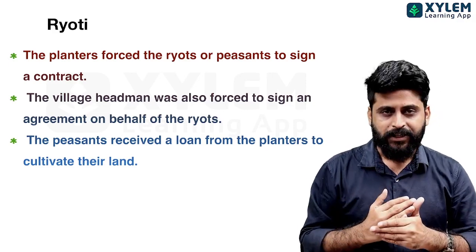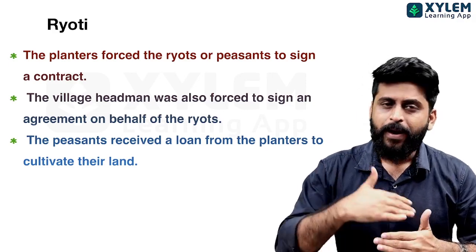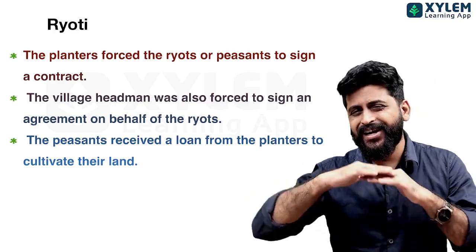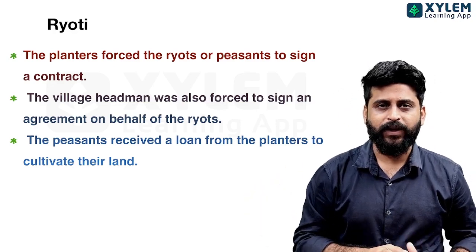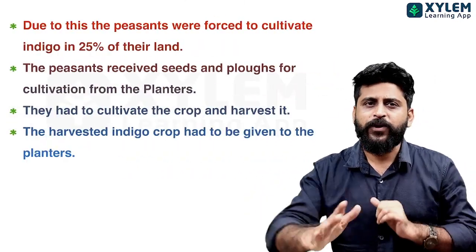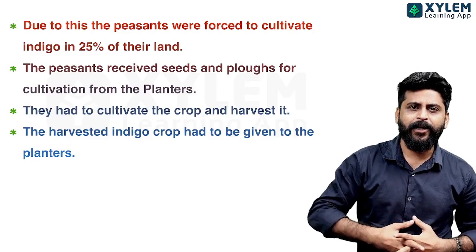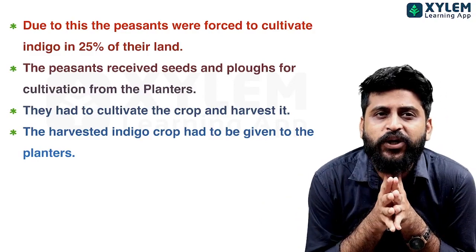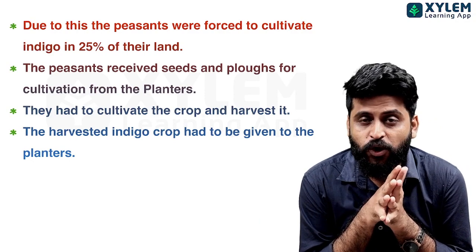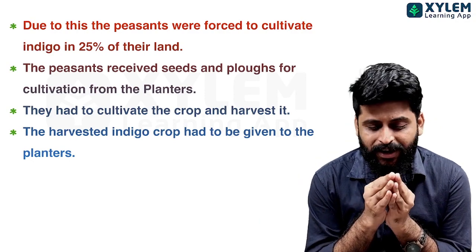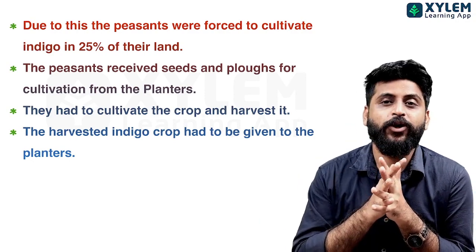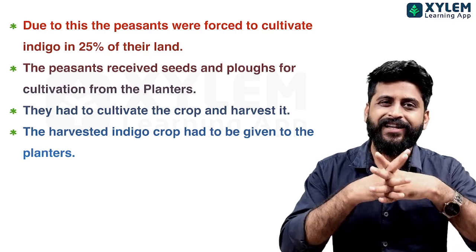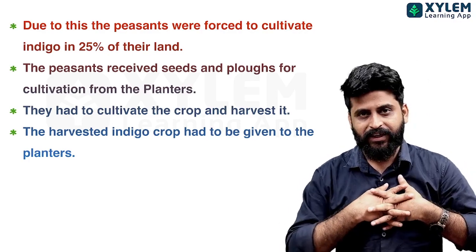After receiving the loan, the peasants had to be ready to cultivate their land. Due to this, peasants were forced to cultivate indigo on 25% of their land. They were able to cultivate indigo on 25% of their land.